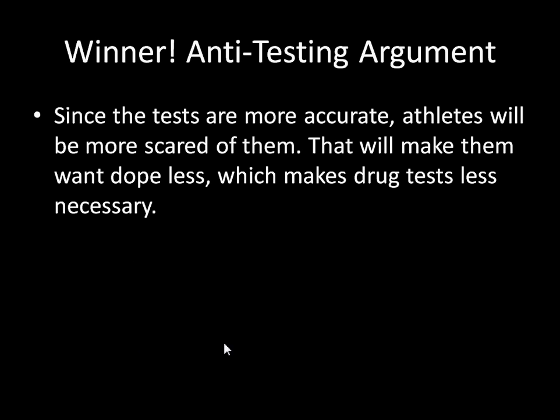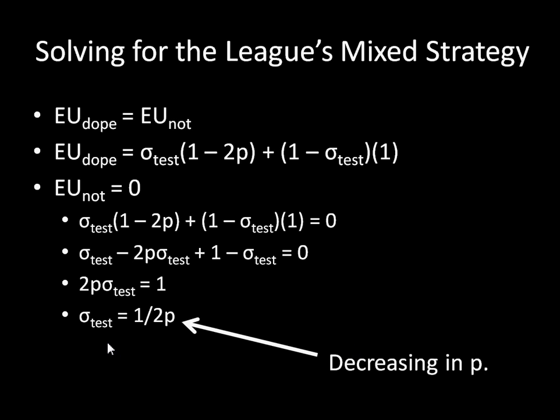The winner is the anti-testing argument. Since tests are more accurate, athletes will be more scared of them, will want to dope less, and that makes drug tests less necessary. One additional noteworthy result: the probability that the league tests is surprisingly not dependent on the cost of the test. The cost is strategically irrelevant to the league's mixed strategy — which is neat and probably unexpected. I hope you enjoyed this timely model, and I'll see you next time. Take care.